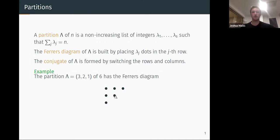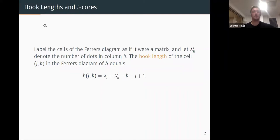So the partition 3, 2, 1 of 6 just has this Ferrers diagram. Three in the first row, two in the second, one in the last. So what's the point? What do we do with these?